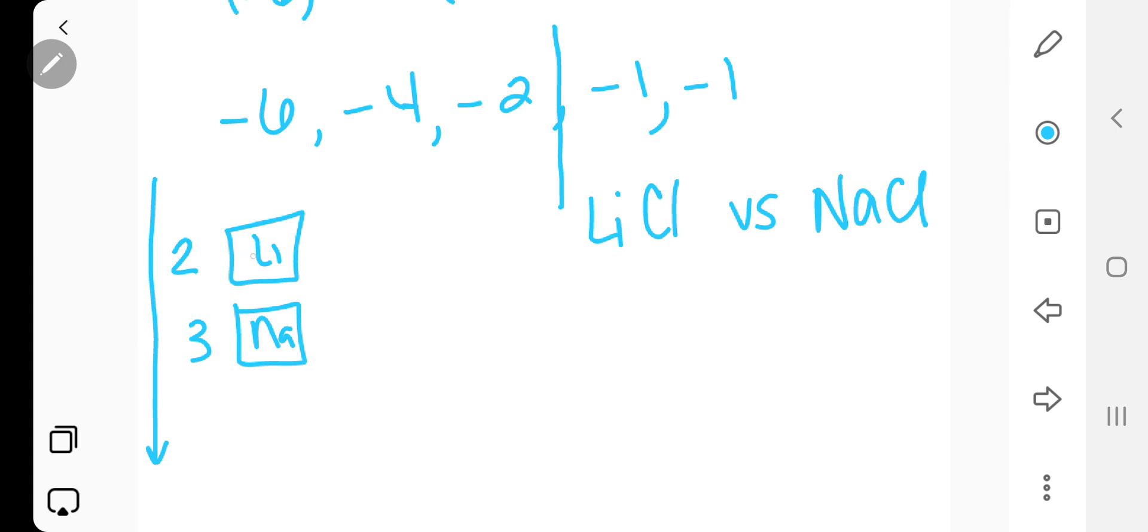So, that means sodium is bigger than lithium. Which, in other words, means that lithium has a smaller ionic radius than sodium. So, lithium has the higher lattice energy.